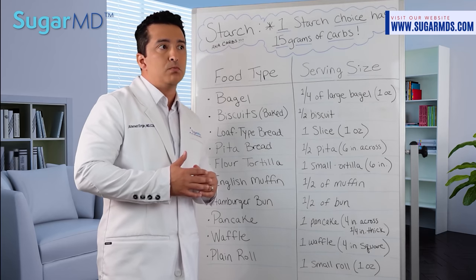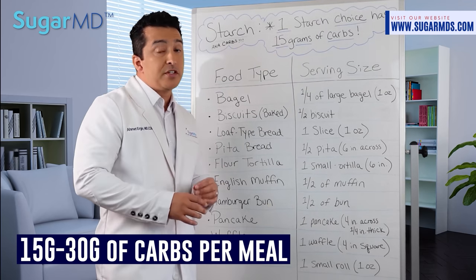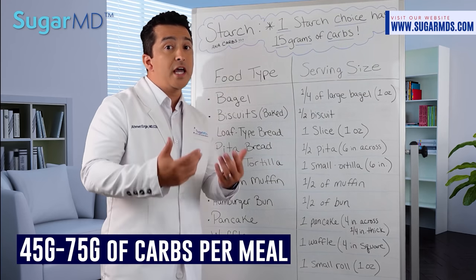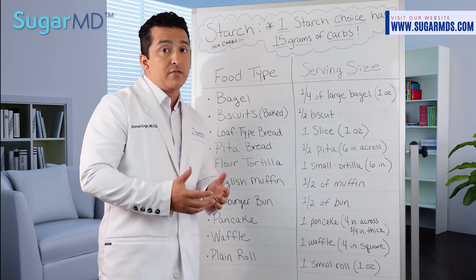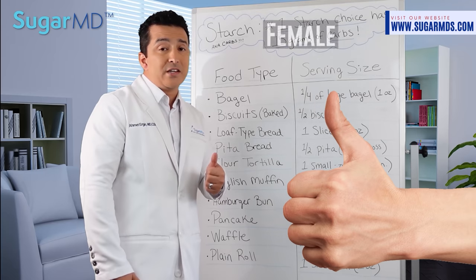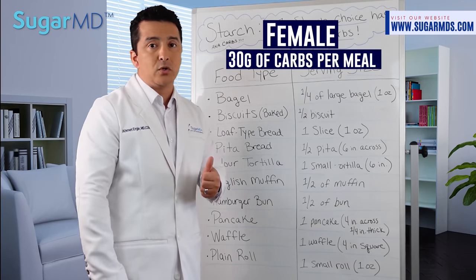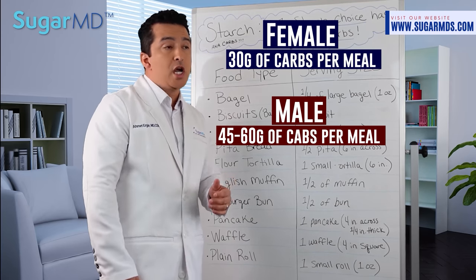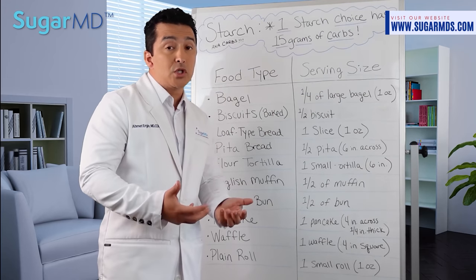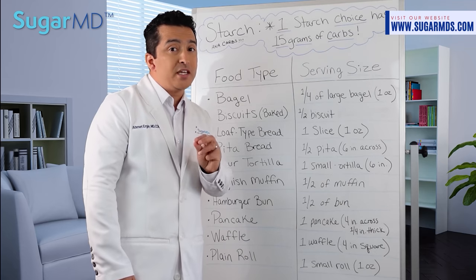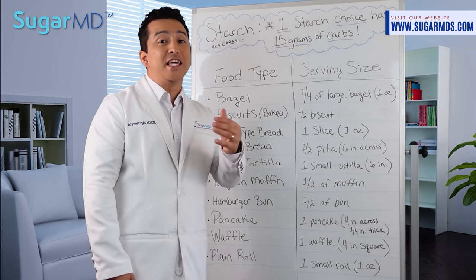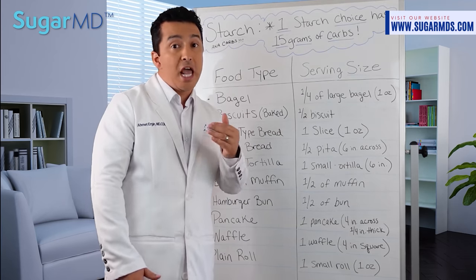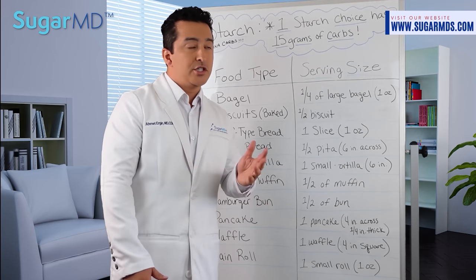How much you should eat depends on the individual. Some of you will need only 15 to 30 grams per meal, and some may need 45 up to 75 grams depending on how active you are — the less active you are, the less carbs you'll need. A rule of thumb: for a female, 30 grams per meal is a conservative approach; for a man, 45 to 60 grams is conservative. You can go lower or higher depending on your diabetes control and activity level. Even if you don't have diabetes, knowing this will help you maintain your weight.